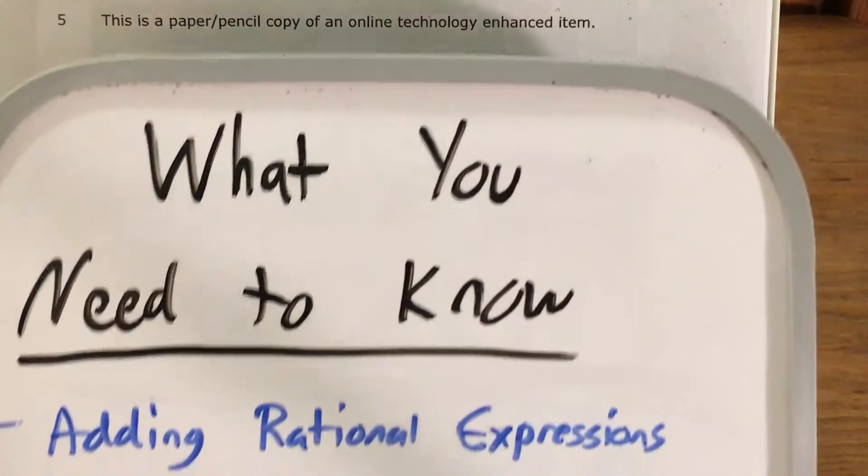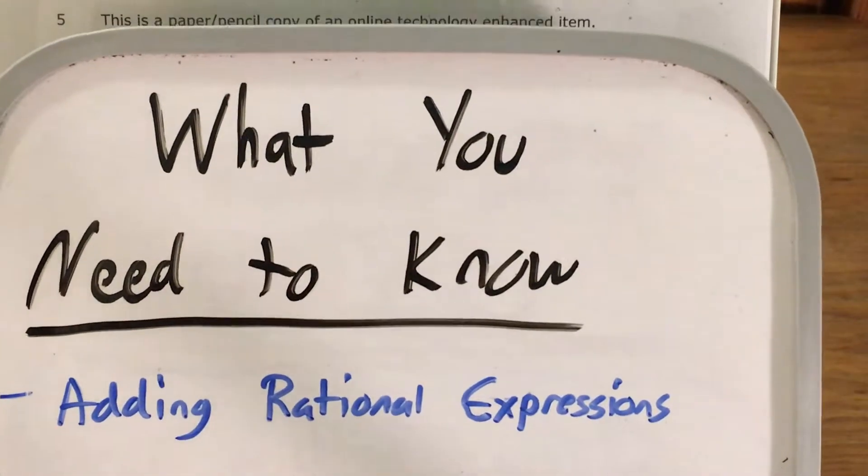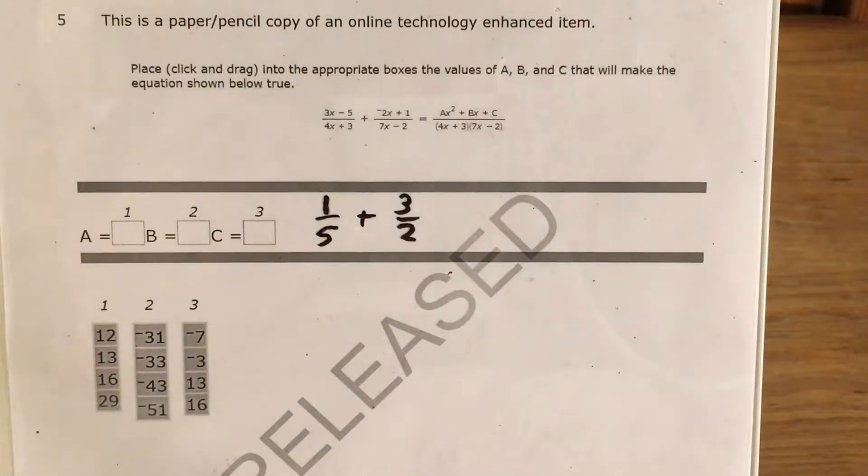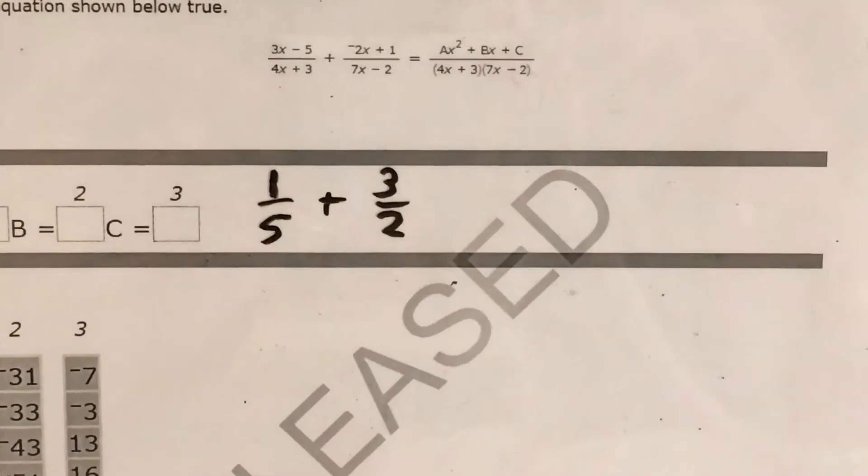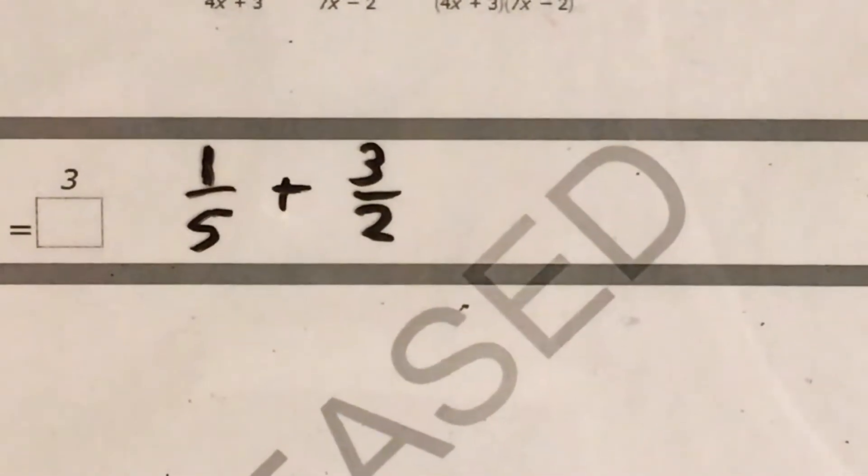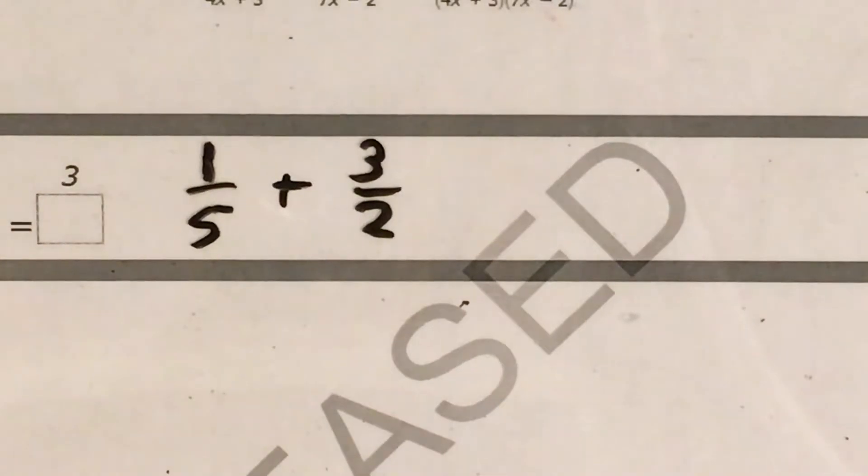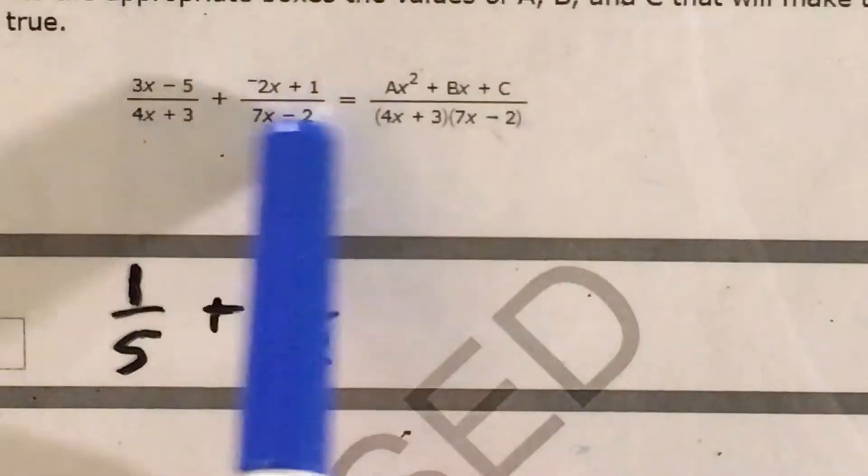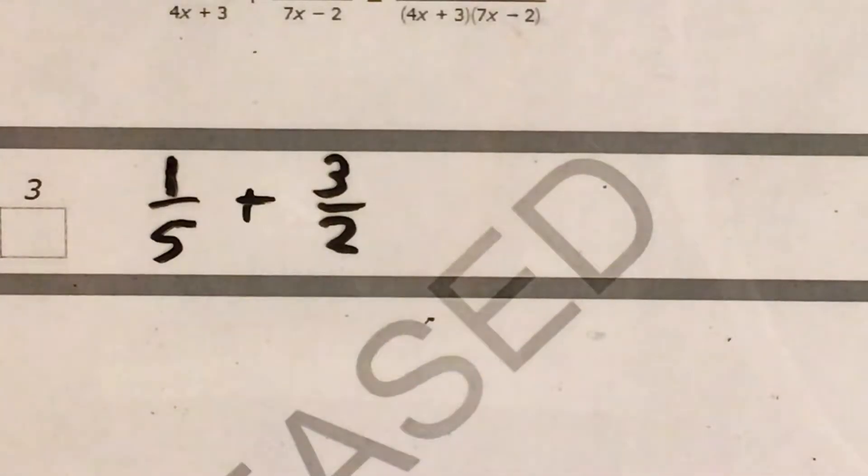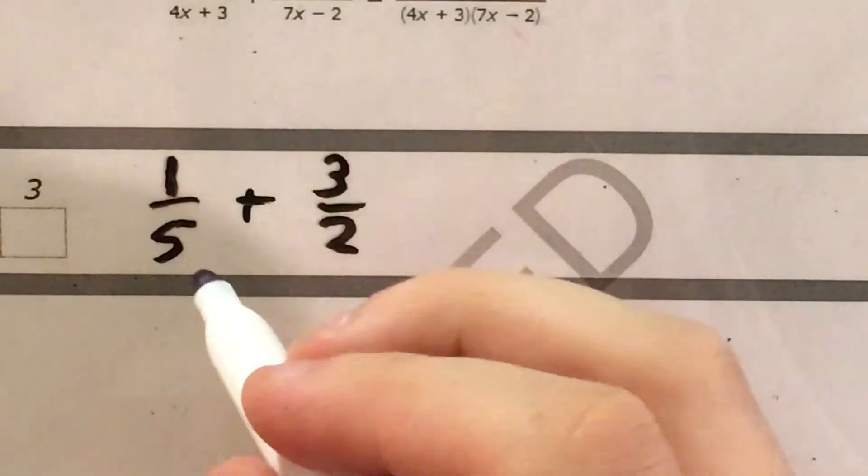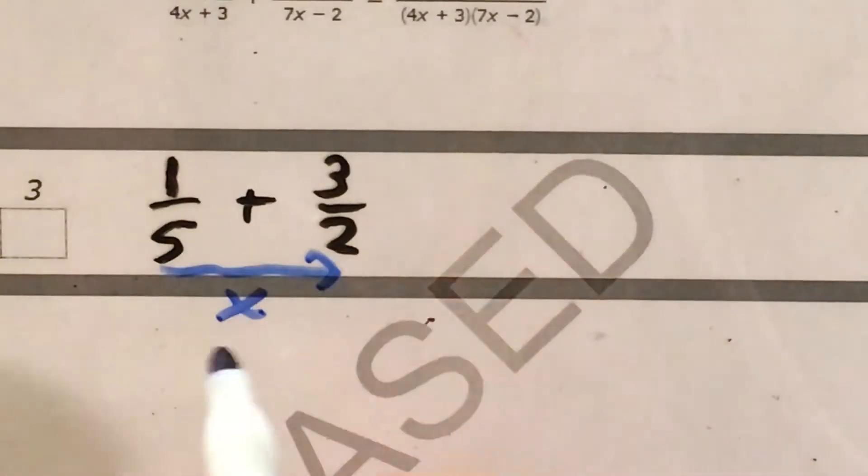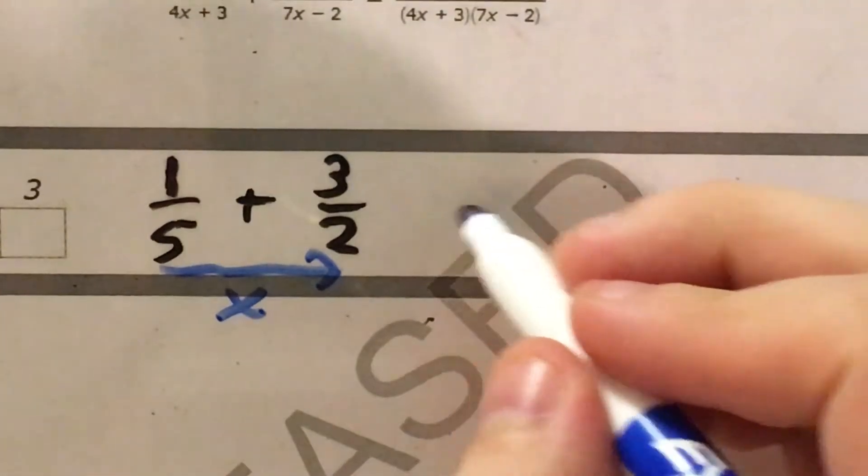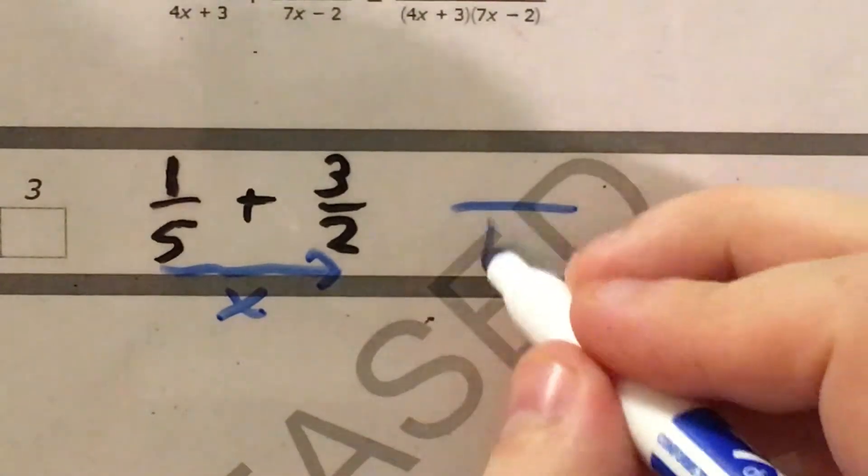Now the big skill that this question is testing is your ability to add rational expressions, and I think it's time that I show you why exactly I wrote 1 fifth plus 3 halves down here. Essentially, the strategy that we use to add rational expressions like these are the same as the strategies we use to just add regular fractions when we have different denominators. And the exact strategy that I prefer to use involves first multiplying my denominators to get the denominator of my new fraction, so 5 times 2 is 10.